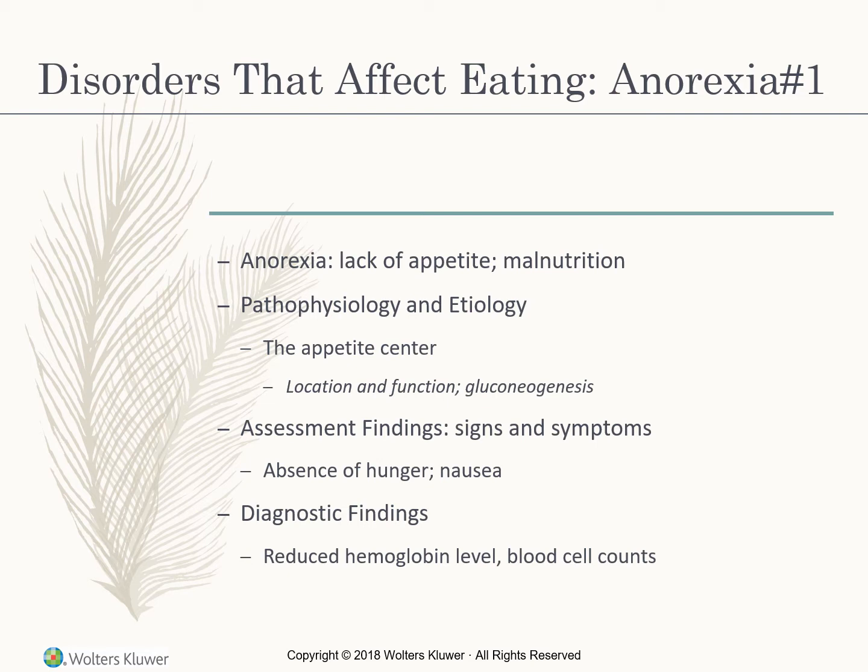Anorexia is defined as a lack of appetite. It can cause malnutrition if it's a chronic state. It takes place in the appetite center as far as nausea. Remember that the liver can break down glycogen to glucose during times of starvation to provide sugar for the body.